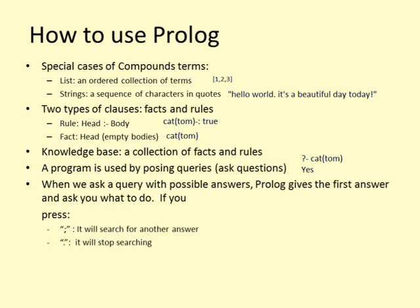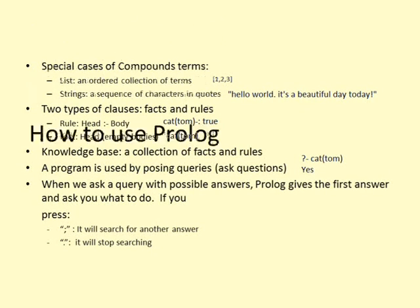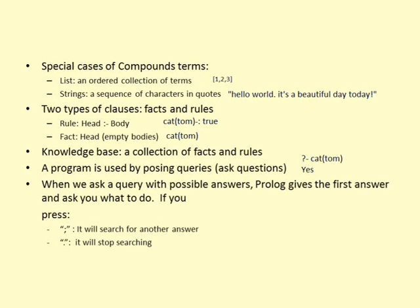A Prolog program is used by posing queries. You pose queries by asking questions about the information stored in the database. When a query has more than one possible answer, Prolog will return the first answer and ask you what to do. If you press semicolon, Prolog will search for another answer. If you press full stop, Prolog will stop searching.